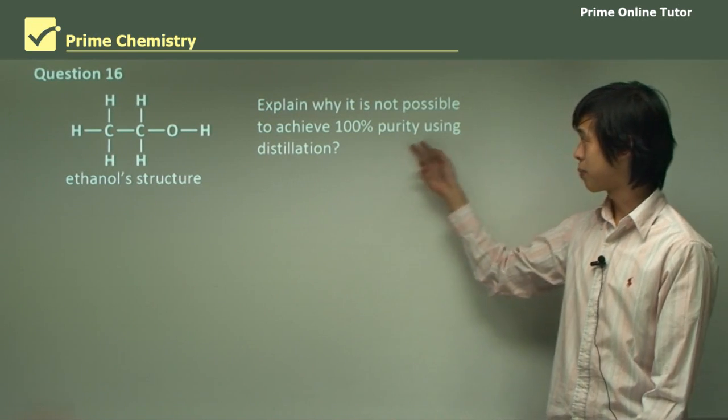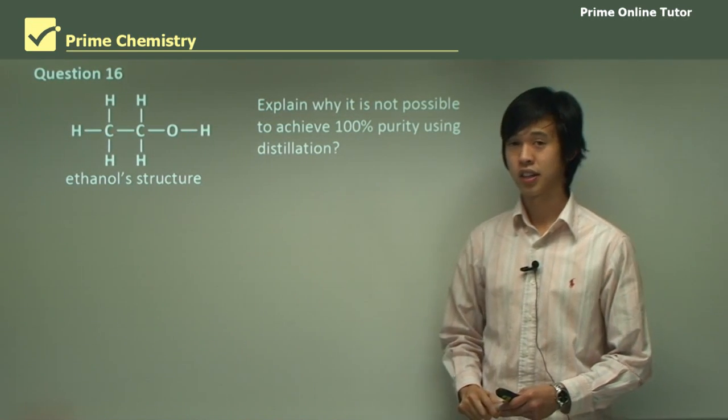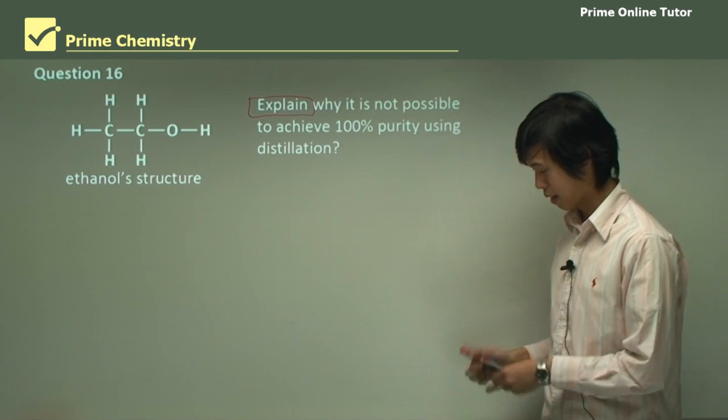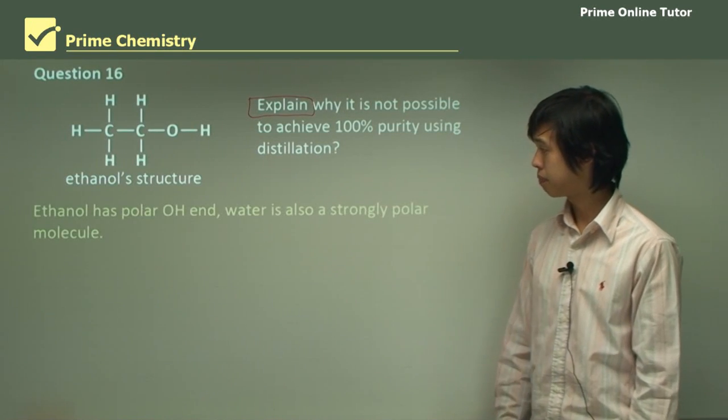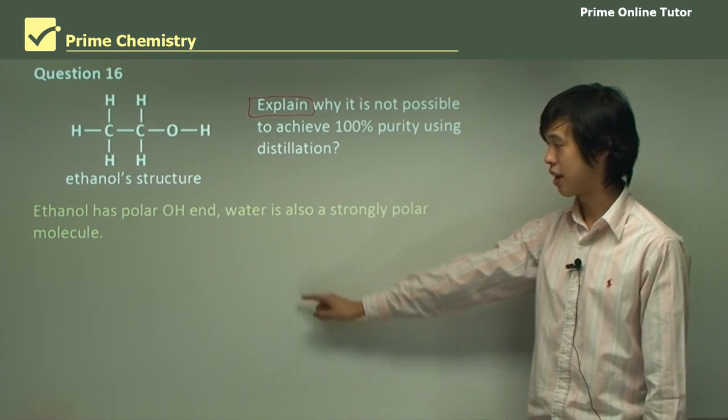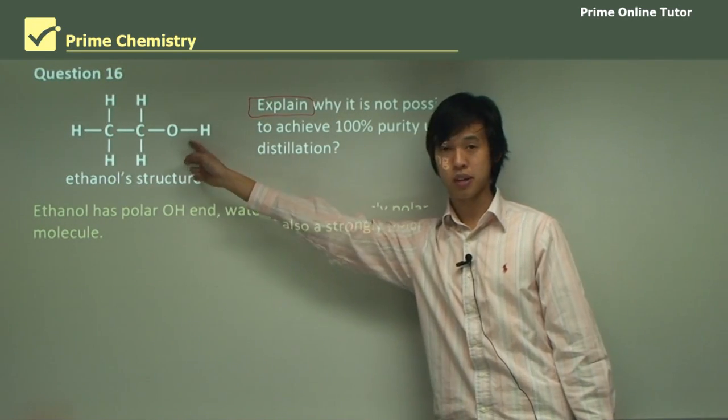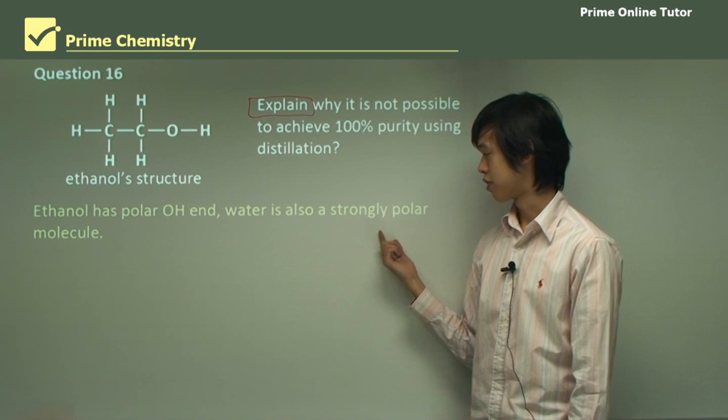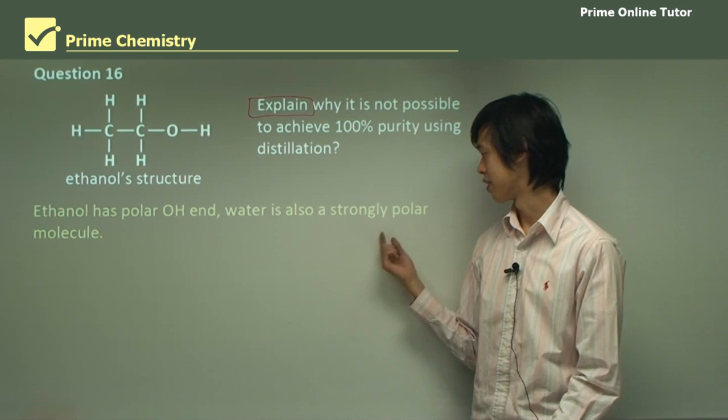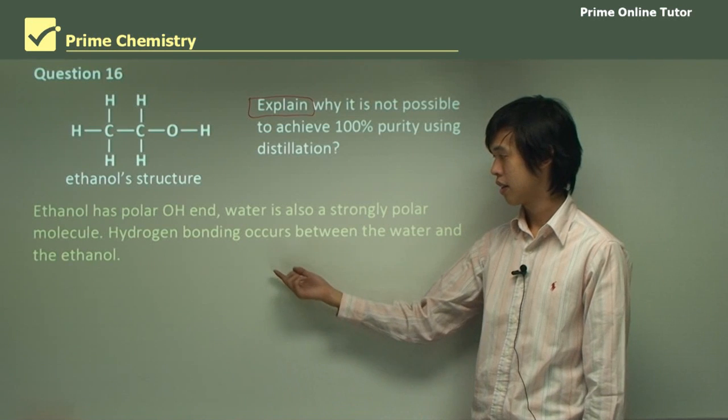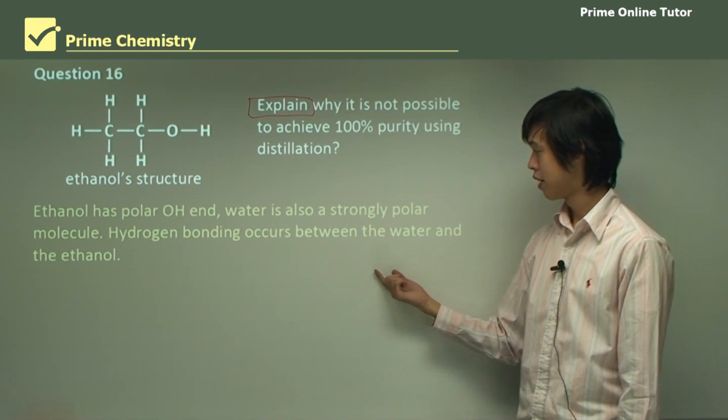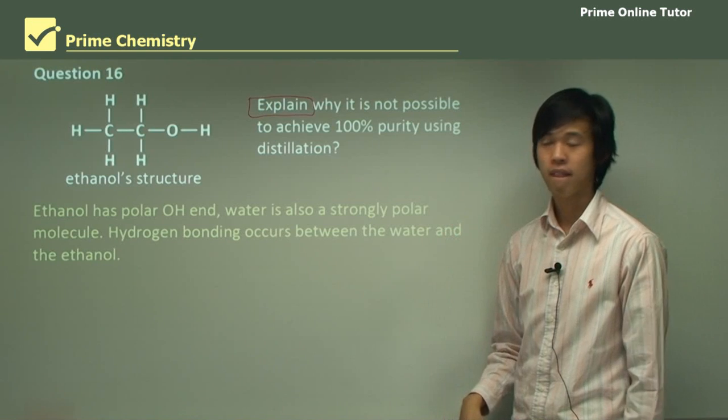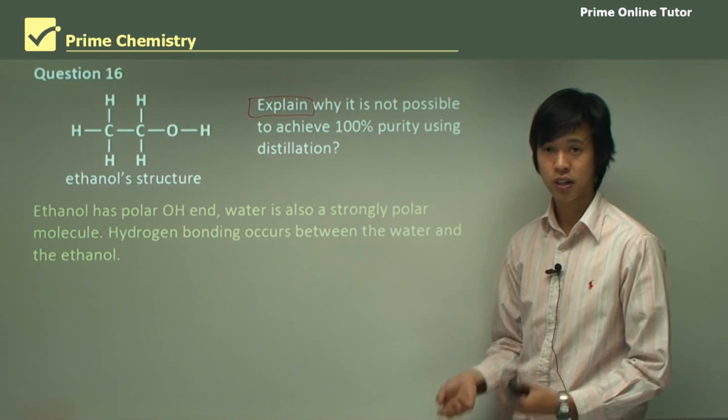So hopefully you guys will be able to explain why it's not possible to achieve 100% purity using distillation. So remembering that we're always talking about explain. And so we're talking about causes and effects. So as you can see here, ethanol has a polar OH end. So this part is quite polar because of the O, very electronegative, creates a dipole. And so water is also strongly polar. We know this. Water is a strongly polar molecule. Now because they're both very polar, hydrogen bonding occurs between the water and the ethanol. So very strongly attached to one another is the ethanol to the water because of that hydrogen bonding.